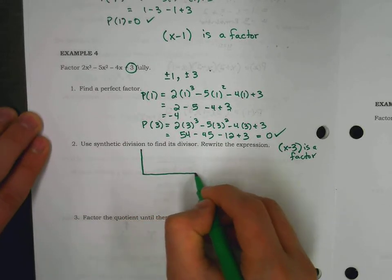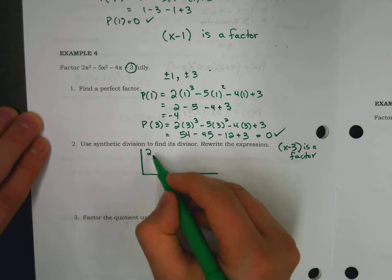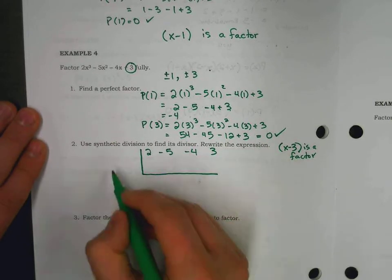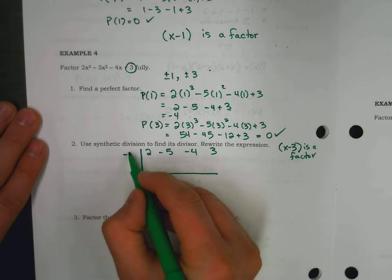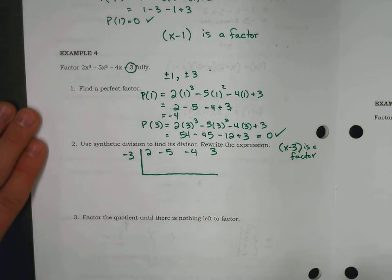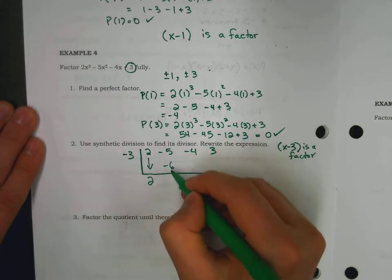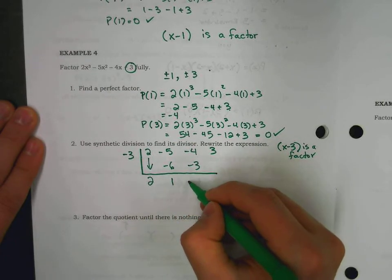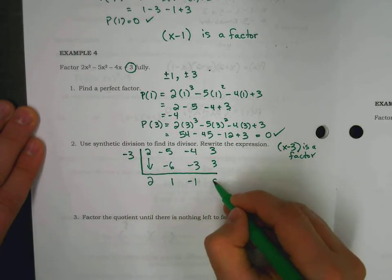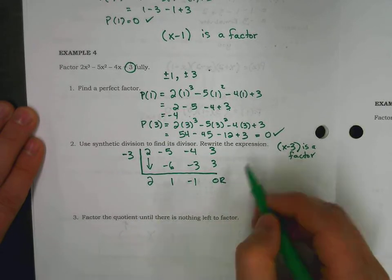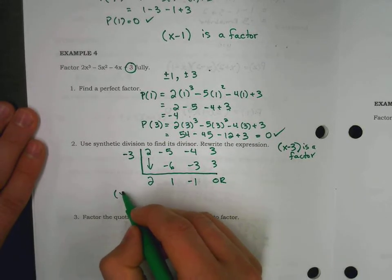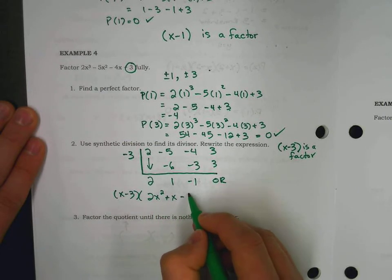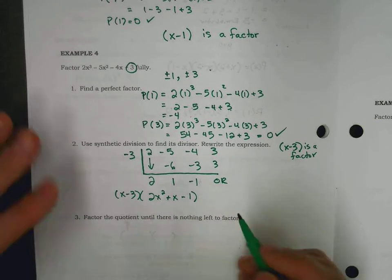Synthetic division. Let's do this. We're going to take our original polynomial 2x cubed minus 5x squared minus 4x plus 3 and divide it by x minus 3. 2 drops down. Multiply. Negative 6. Subtract. Multiply. Subtract. Multiply. Zero remainder. We already knew that, but this confirms it. So, we get x minus 3 times 2x squared plus x minus 1. Perfect.